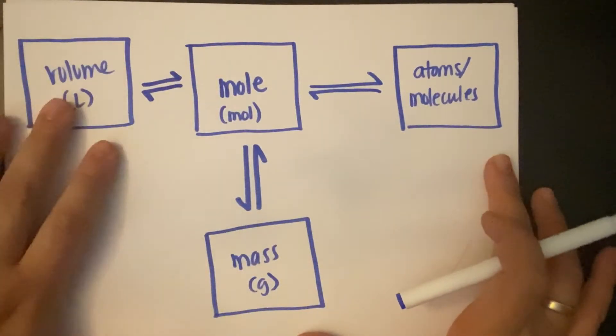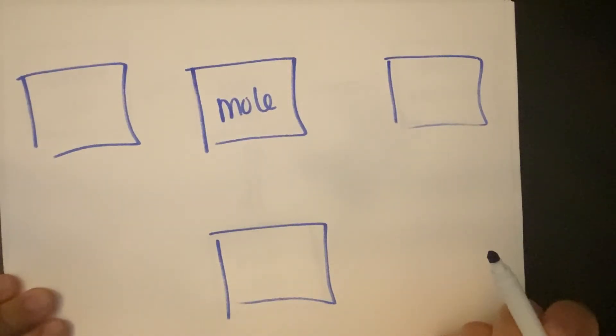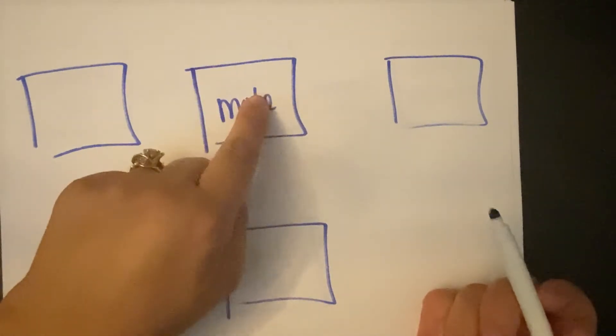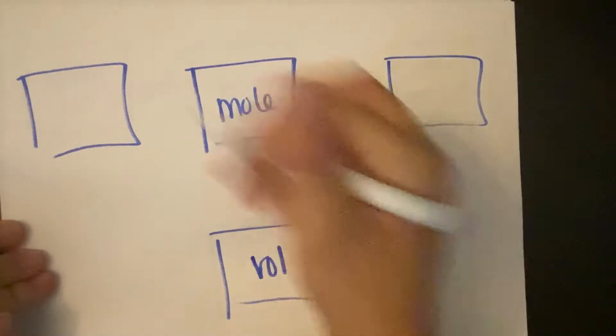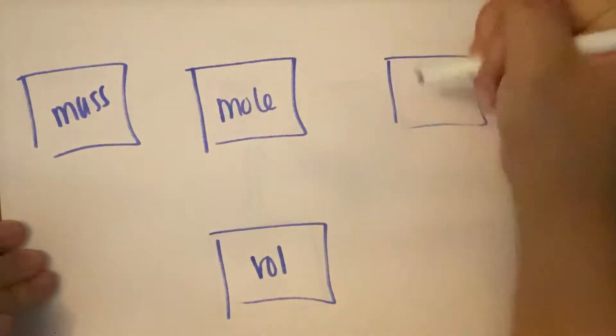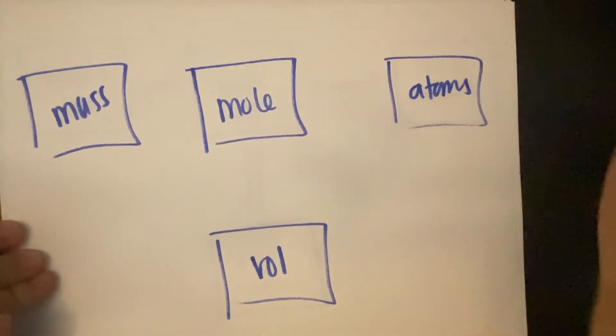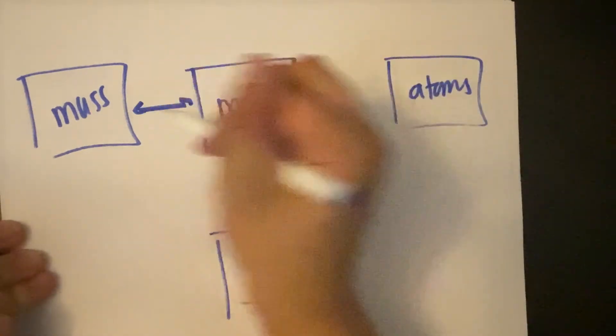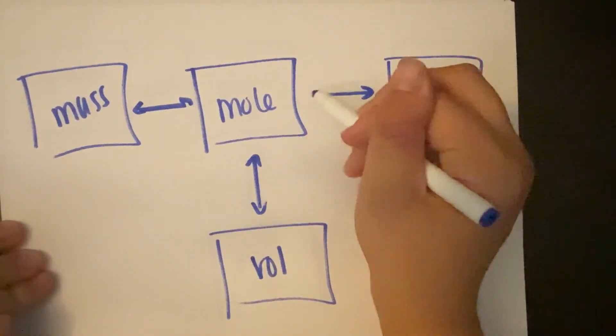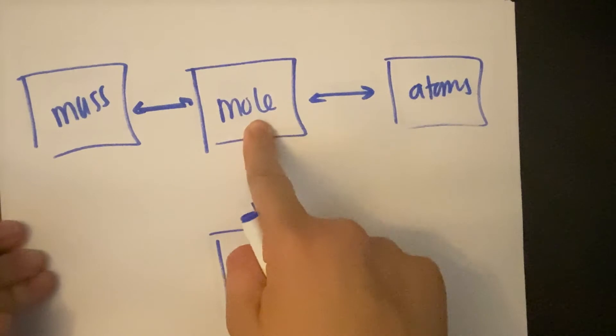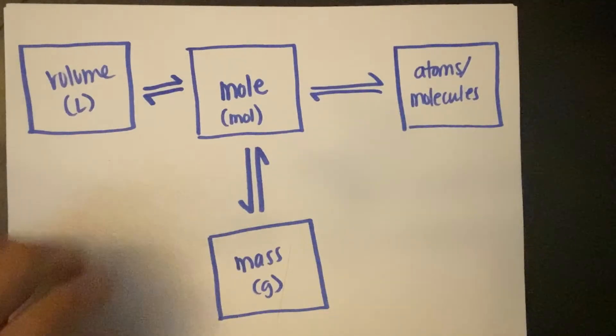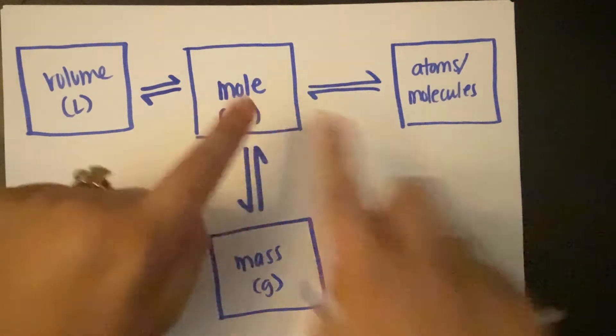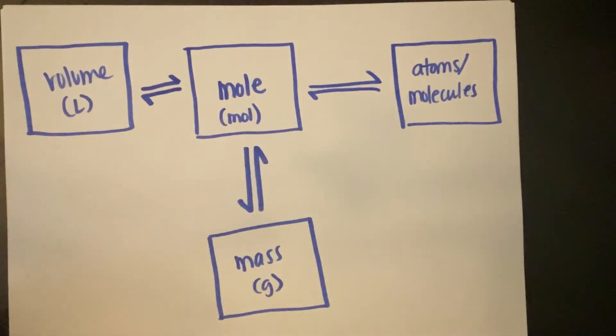So the idea of this little graphic - if you are on a quiz or a test or something, if you can just remember mole goes in the middle and all the other stuff goes around the side, it doesn't matter where you put it. You could put volume here, mass here, and atoms here. Doesn't matter, because the process is still going to be the same so long as you put mole in the center.